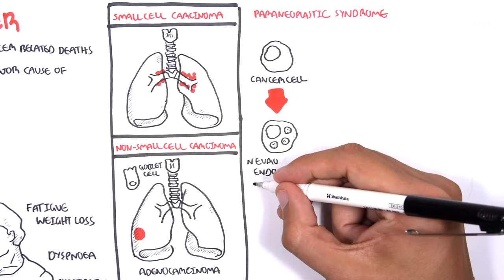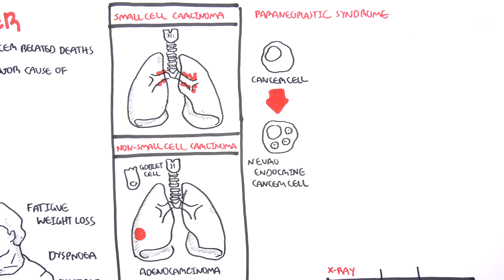Neuroendocrine cancer cells are found in certain types of lung cancer, particularly small cell carcinoma and squamous cell carcinoma.